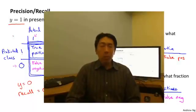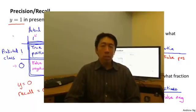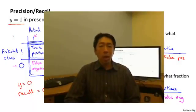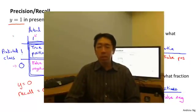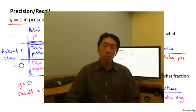For the problem of skewed classes, precision and recall give us more direct insights into how the learning algorithm is doing, and are often a much better way to evaluate our learning algorithms than looking at classification error or classification accuracy when classes are very skewed.